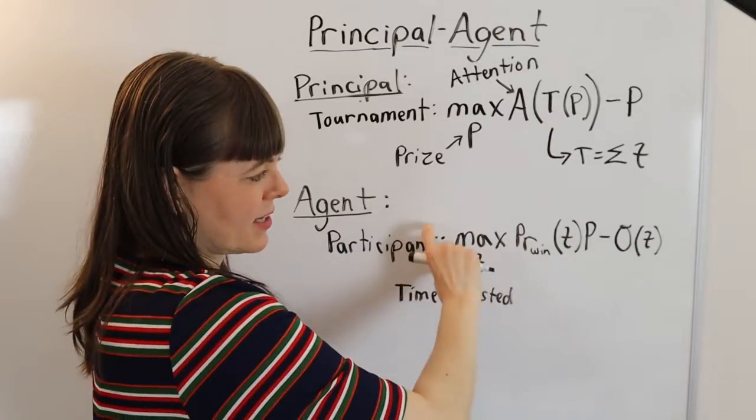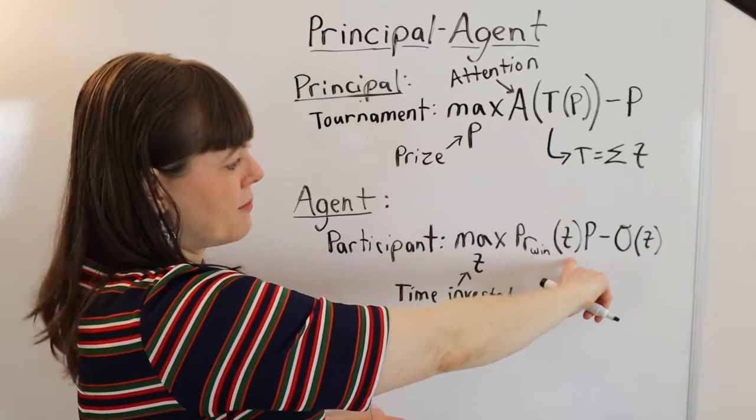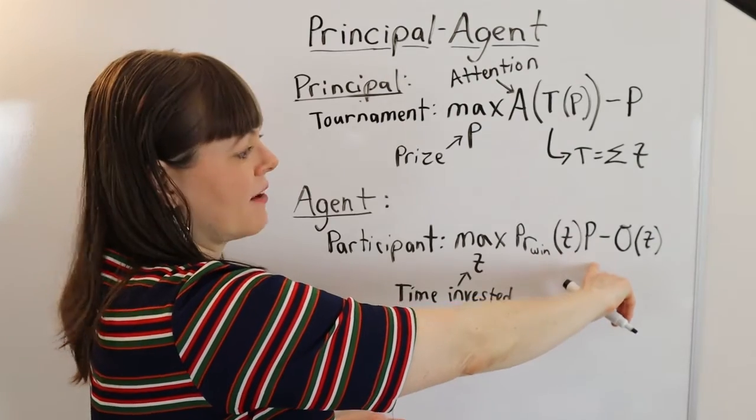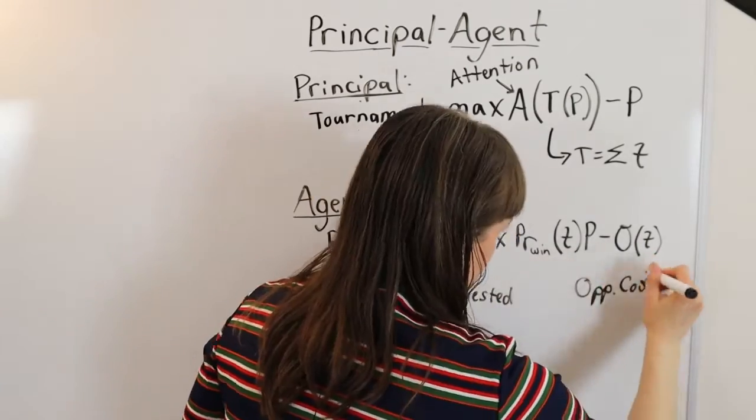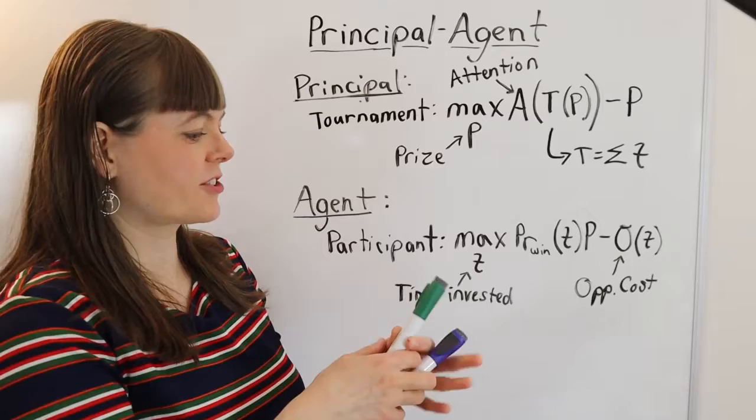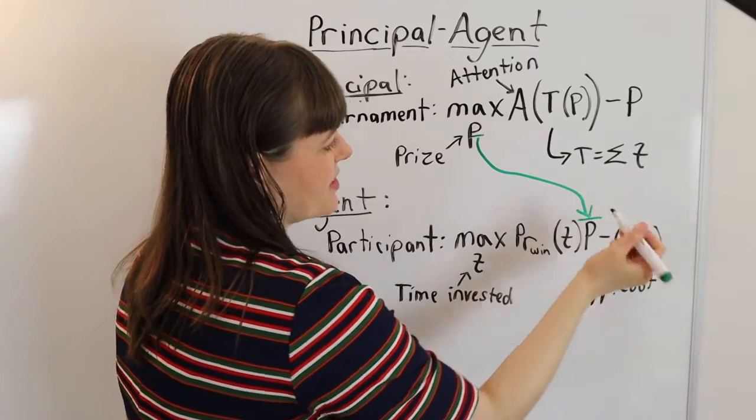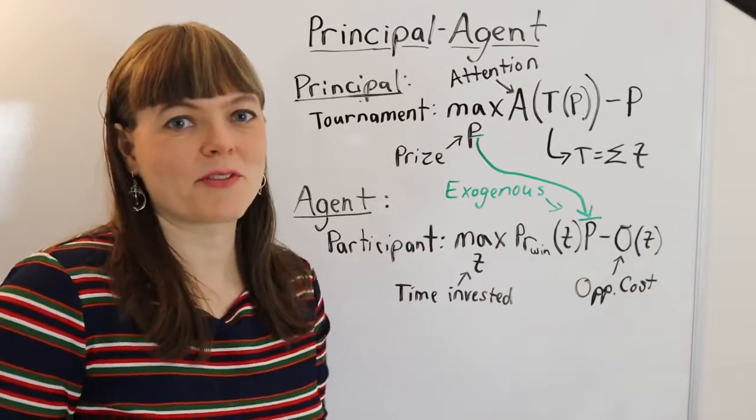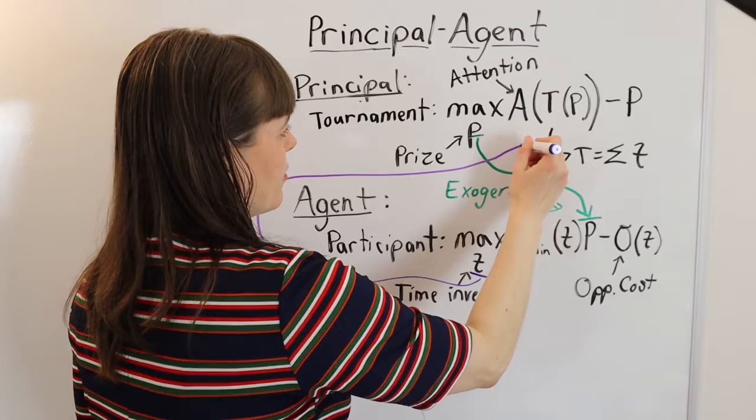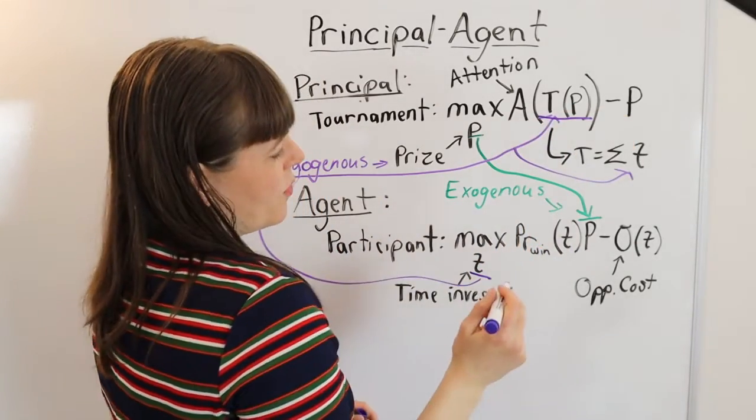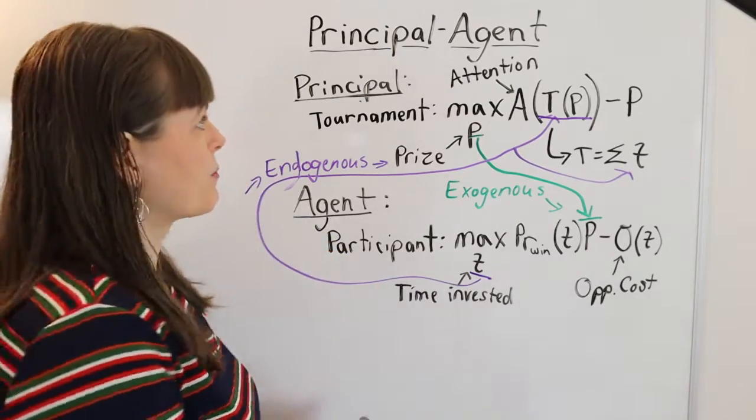Where the participant's maximization problem is down here, we have the participant trying to optimize their probability of winning as a function of their time investment times the prize money if they win, minus the opportunity cost of the time they invest as a function of T. So let's check if it has the same pattern that I've described, where the choice variable for the principal appears in the agent's optimization problem as an exogenous variable. And the choice variable for the agent is going to appear in the principal's model as an endogenous variable. It's endogenous up here. And so we basically have this pattern appearing over and over in principal agent models.